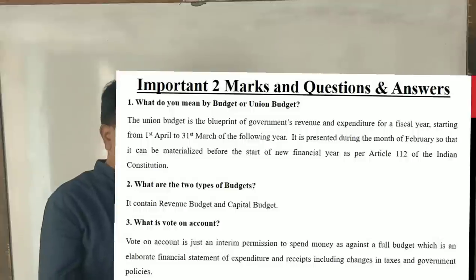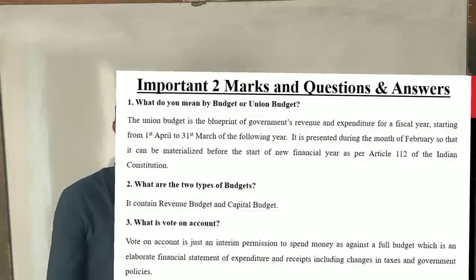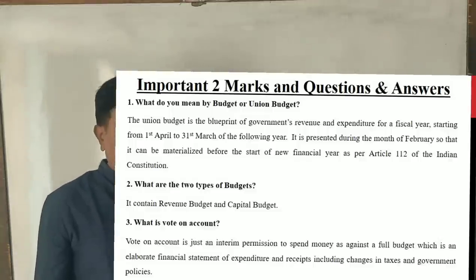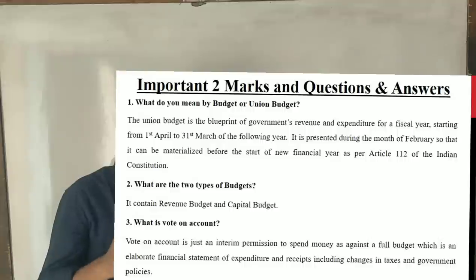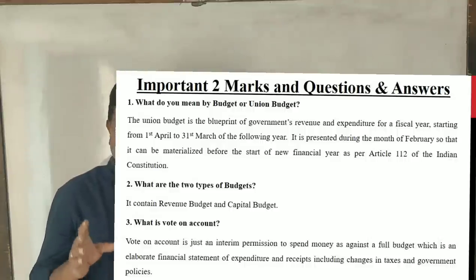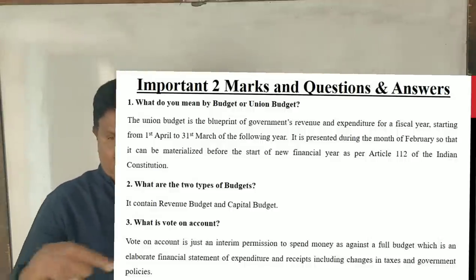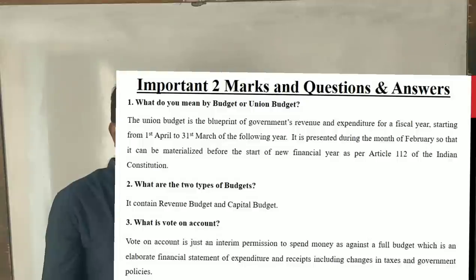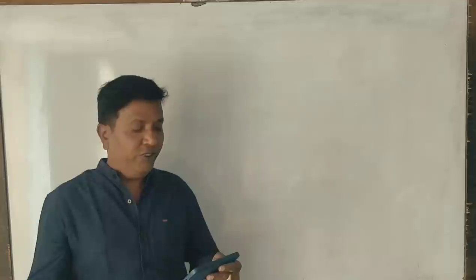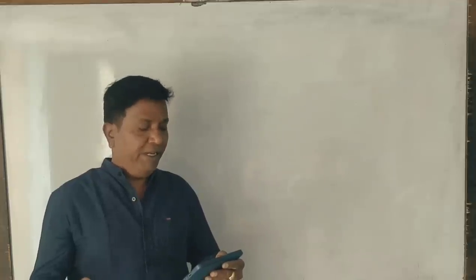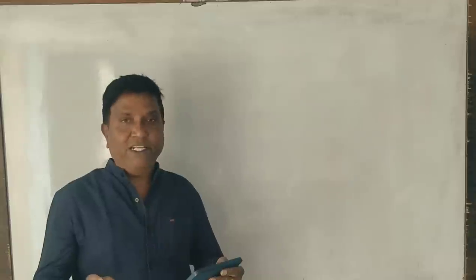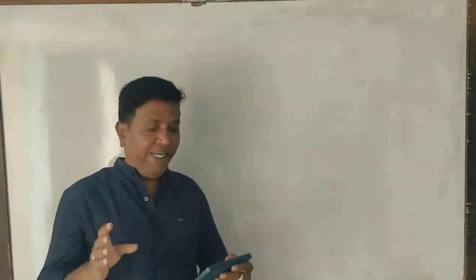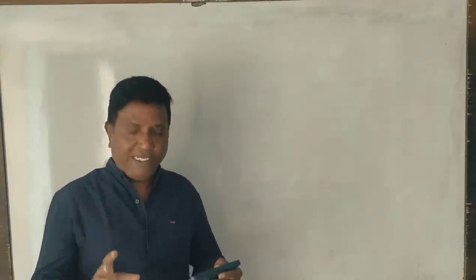What is a budget? The union budget is the blueprint of government revenue and expenditure for a fiscal year — a financial year starting from 1st April to 31st March of the following year. It is presented during the month of February usually, so that it can be materialized before the start of the new financial year, as per Article 112 of the Indian Constitution. This is the meaning of union budget.